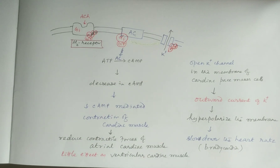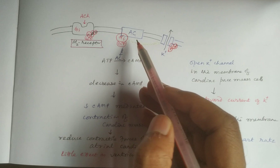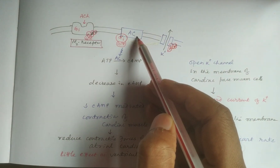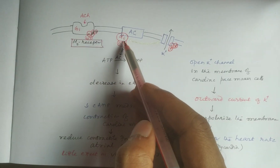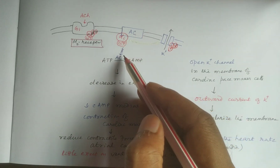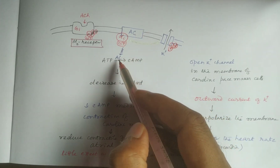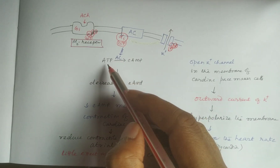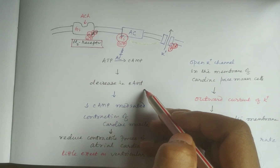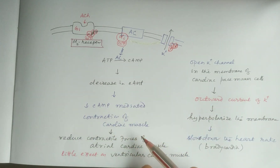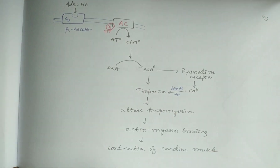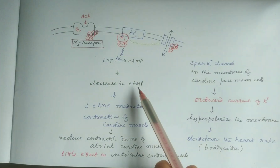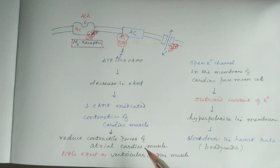In the case of the M2 receptor, adenylate cyclase is inactivated because this is a Gi-type G-protein coupled receptor, where alpha-i binds with and inhibits adenylate cyclase. There is inhibition of the conversion of ATP to cyclic AMP, leading to decreased cyclic AMP, and therefore cyclic AMP-mediated contraction of cardiac muscle is inhibited. This contrasts with the beta-1 receptor pathway, where cyclic AMP mediates contraction; with no cyclic AMP formation, there is no contraction.